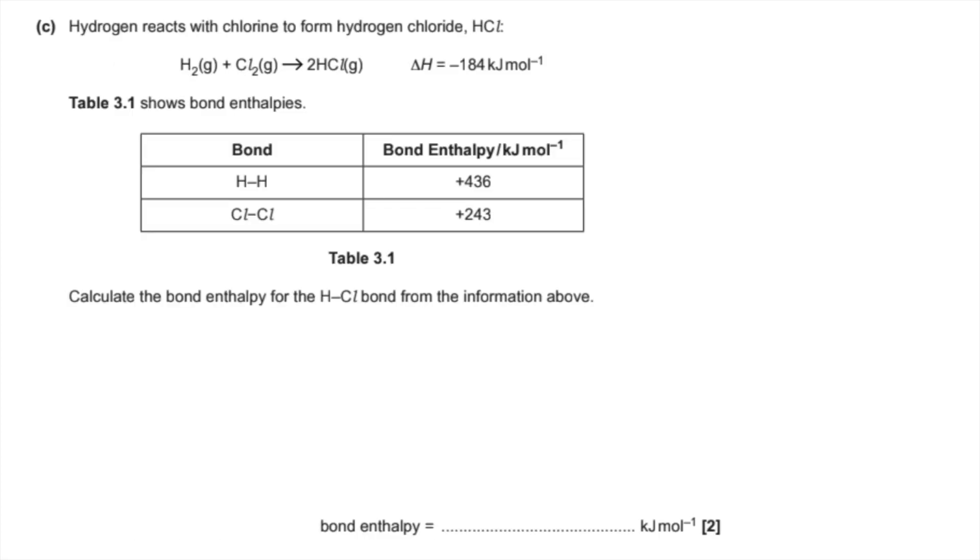Part C now. So the enthalpy part of the question kicks in now. We've got to calculate the bond enthalpy for the H-Cl bond from all of that information. So when you're using bond enthalpies, the way I describe the calculation is an in minus out calculation.